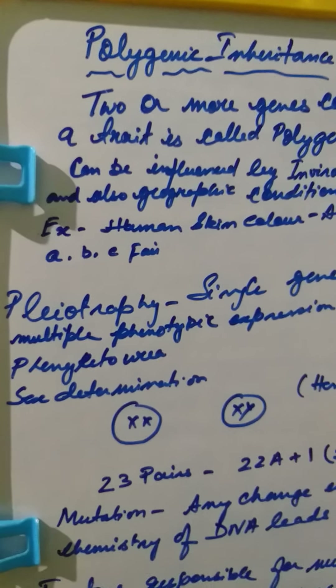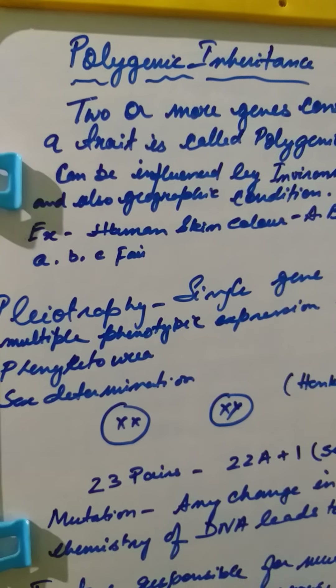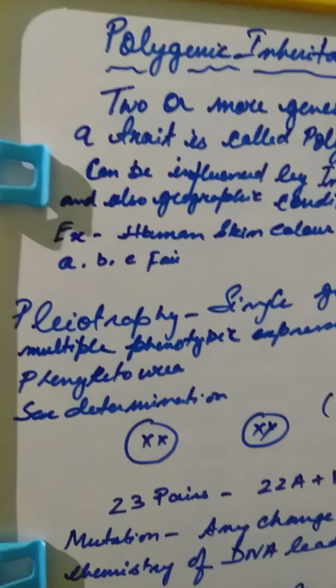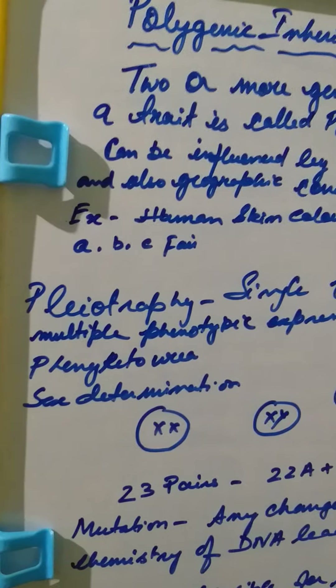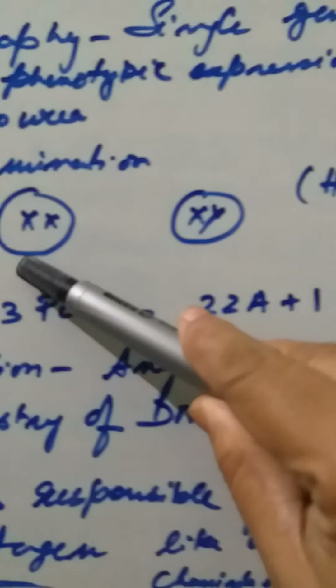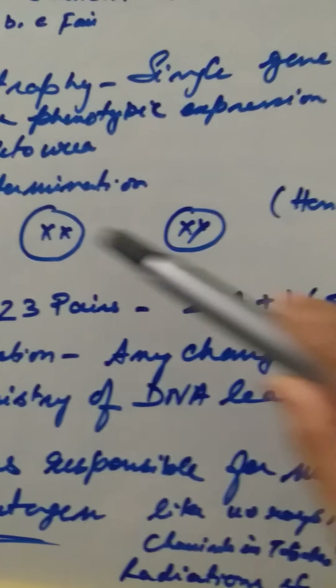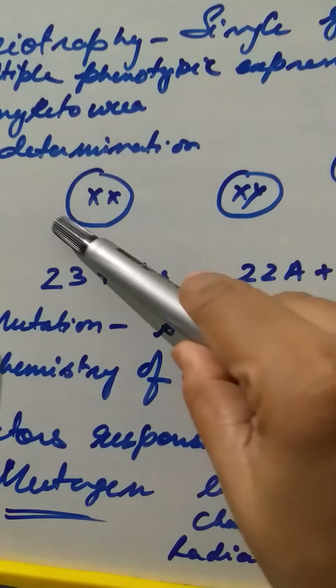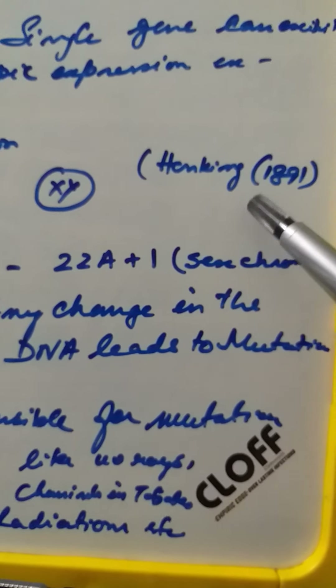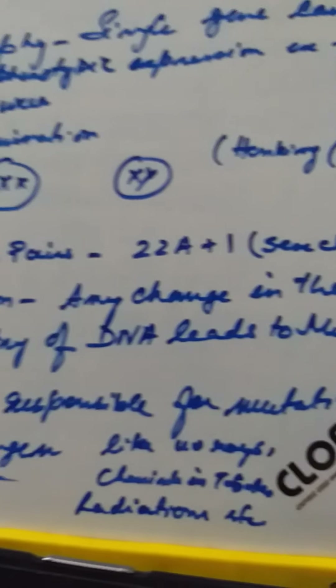Phenylketonuria is also considered a disease, and we will cover it in more detail later. Now the next topic is sex determination. XX and XY are the two types of sex chromosomes, and this was discovered by Henking in 1891.